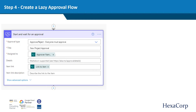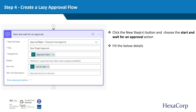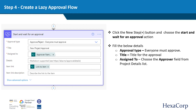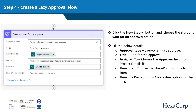After the settings for the SharePoint connection are completed, click the New Step button and choose the Start and Wait for an Approval action. Provide the following details: Approval type — Everyone Must Approve. Title — a title for the approval. Assign To — choose the approver field from the project details list. Item Link — choose the SharePoint list link to item. Item Link Description — give a description for the link.